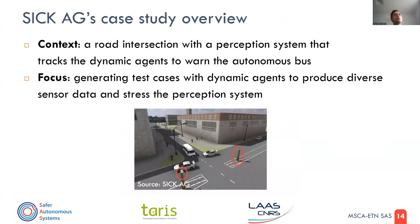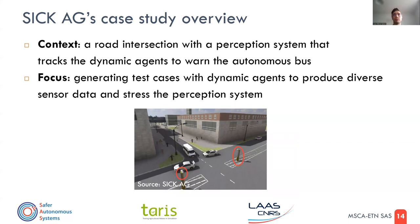Moving to the second case study: it's about a road intersection where there is a perception system — sensors — that monitors the road intersection. The perception system tracks dynamic agents: pedestrians and vehicles. This tracking information is sent to an autonomous bus that has to cross and pass through the road intersection.